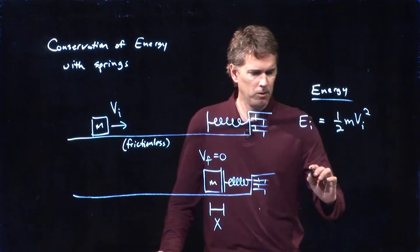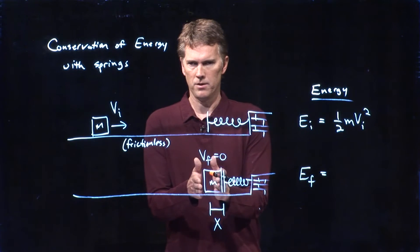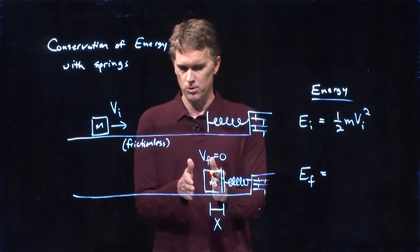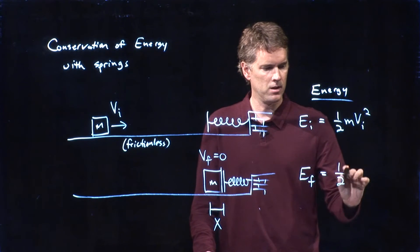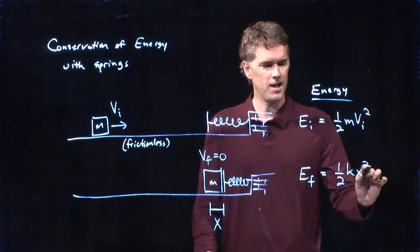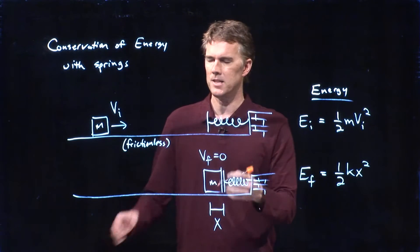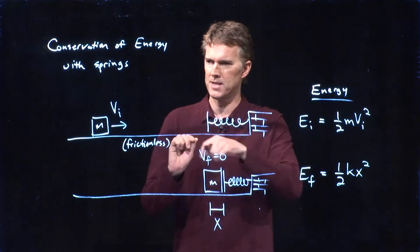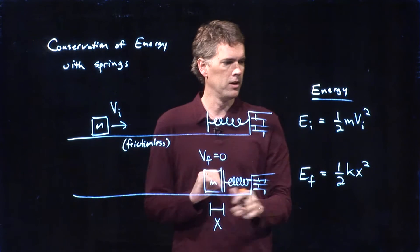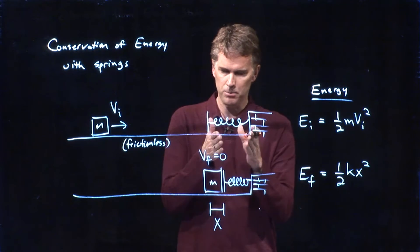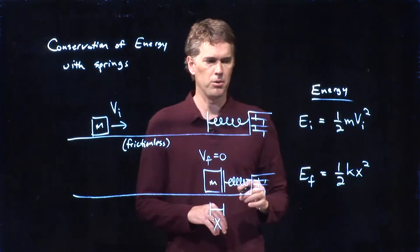In the final picture, the block has come to rest. There's no kinetic energy in the block anymore. But the spring has compressed. It compressed a distance x. K is the spring constant for that particular spring. Depends on the material, depends on how tightly it's wound, it depends on how thick the material is. It is dependent on the particular spring that you're using. But x is how far it gets compressed.